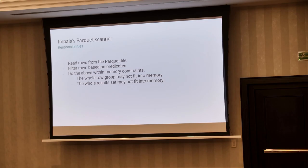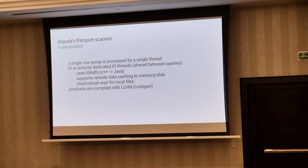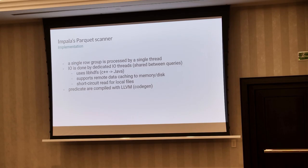We try to use as little memory during scanning as possible. Also, the results don't have to fit into memory, since even a small Parquet file can expand to a lot of data because of efficient encodings. In the basic design, one row group is processed by a single thread. IO is an exception that happens in parallel, so IO reads and actual processing can overlap. At the end, we move the data to a row-oriented format and apply the predicates, which are compiled with LLVM, making it quite efficient.